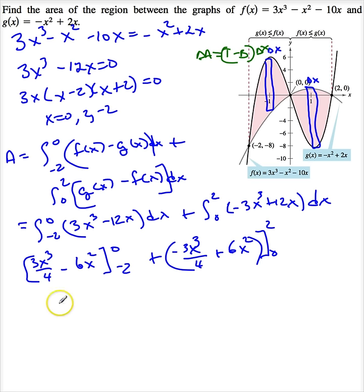So when I evaluate these, this becomes 3 over 4 times negative 2 to the fourth minus 6 times negative 2 squared. So that's my first term.